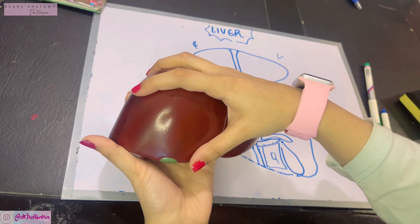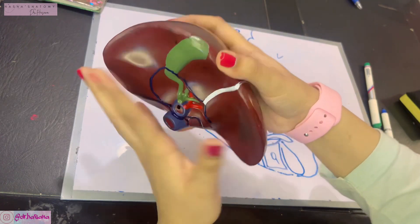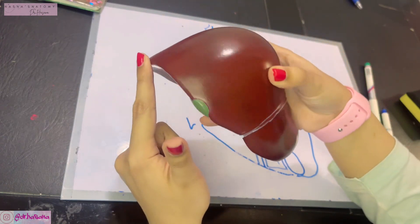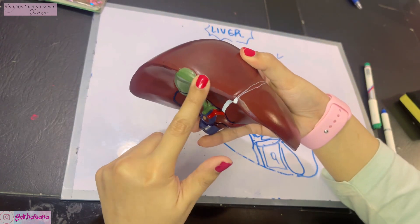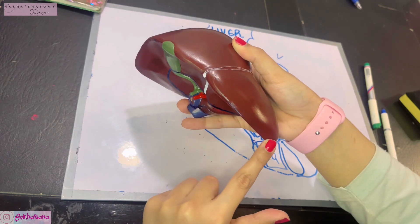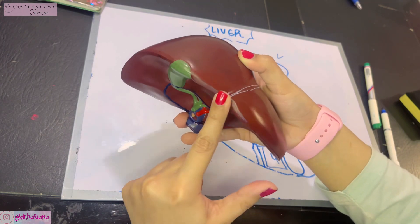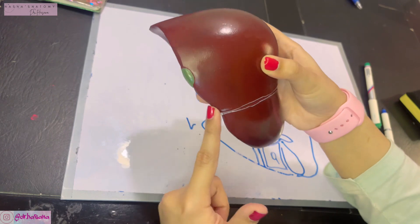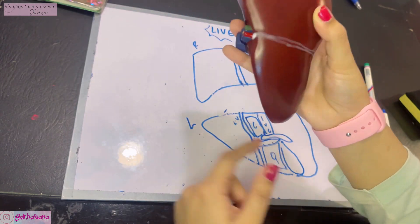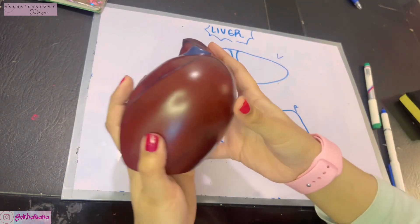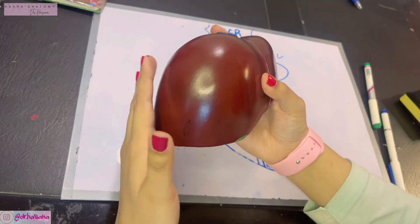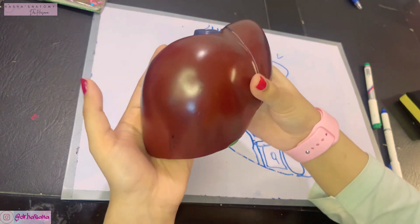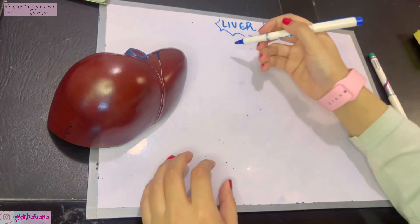The diaphragmatic and visceral surfaces are divided from each other by a well-demarcated border called the inferior border of the liver. This is the most well-demarcated border. Apart from this, there are more surfaces, but they are separated by ill-defined rounded borders.